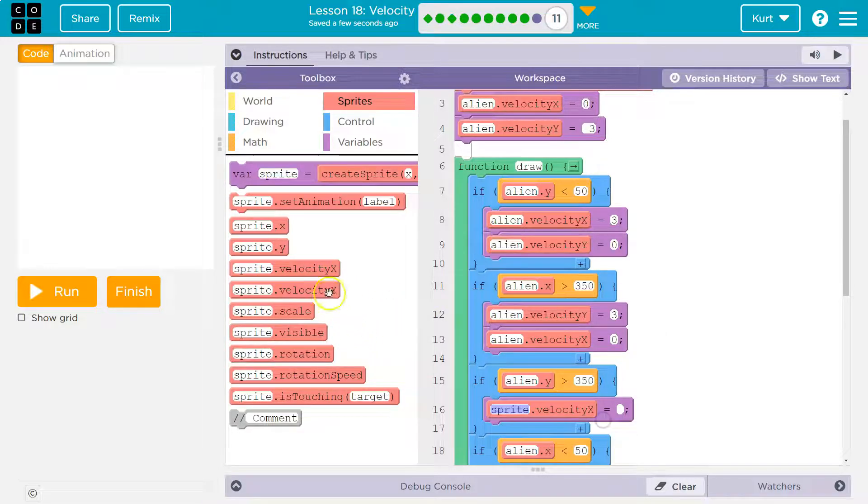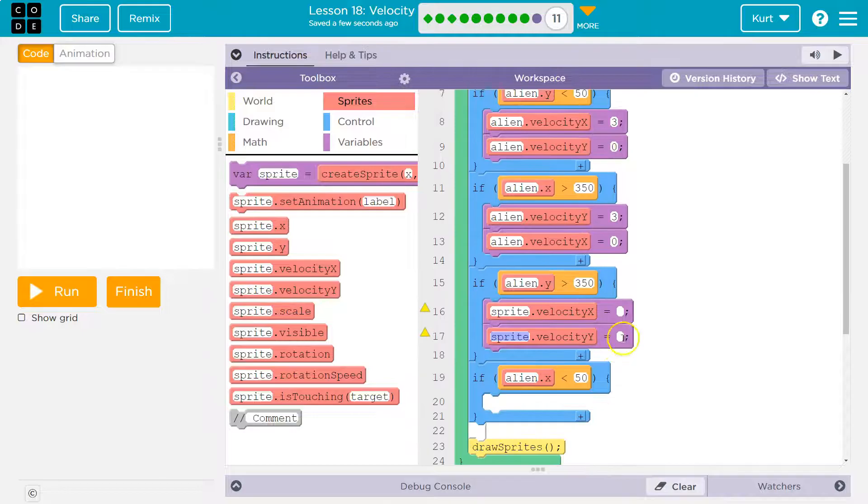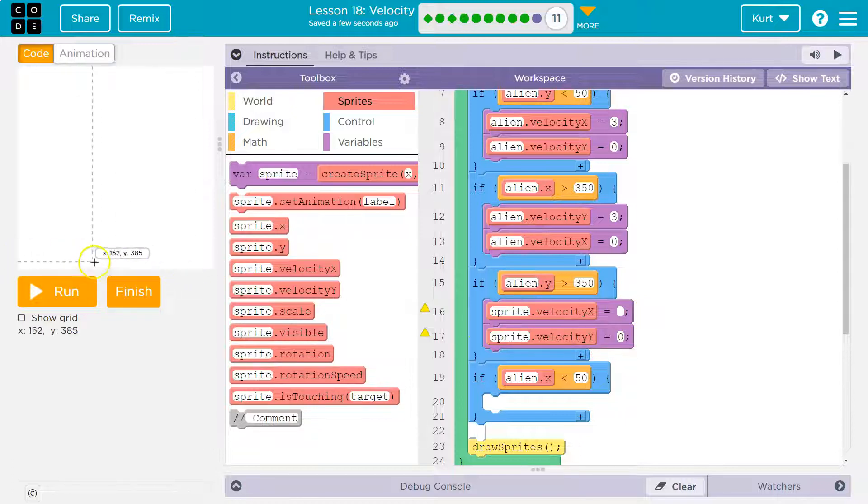So velocity X, velocity Y. Once we get to this corner, we don't want to go off the bottom of the screen. So we want to stop moving up and down by making our velocity for Y is zero. And to go to the left, we need to subtract from X.